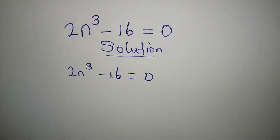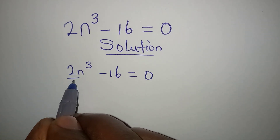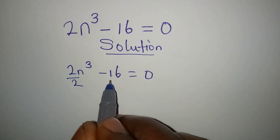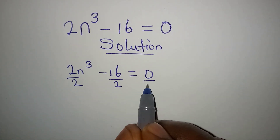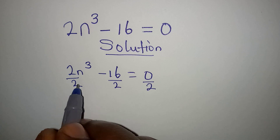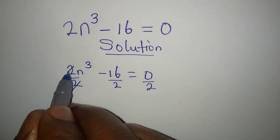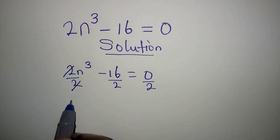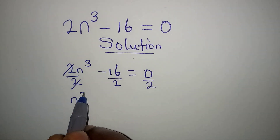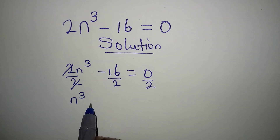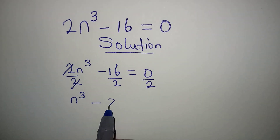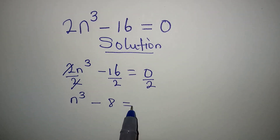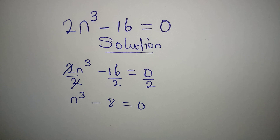To solve this problem, we can divide all through by 2. Divide this by 2, and then n to the power of 3 minus 16 over 2 is 8. This is now equal to 0.